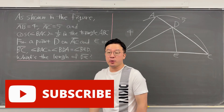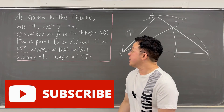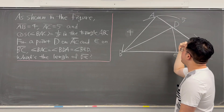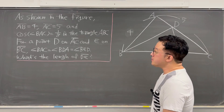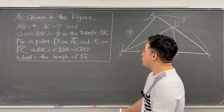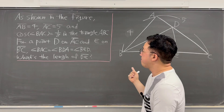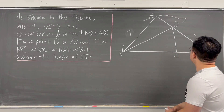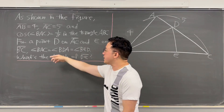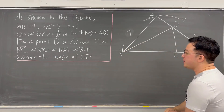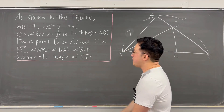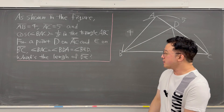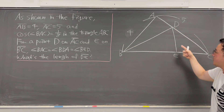Now we have an interesting geometry question. As shown in the figure, the line segment AB is equal to 4, the line segment AC is equal to 5, and cosine of angle BAC is 1/8 in triangle ABC. For a point D on the line segment AC and a point E on the line segment BC, angle BAC equals angle BDA, and angle BED is also the same. So what is the length of line segment DE?